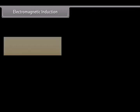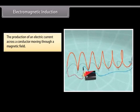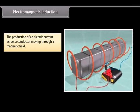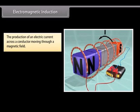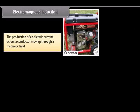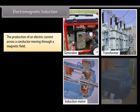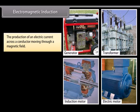Electromagnetic induction. The production of an electric current across a conductor moving through a magnetic field is called electromagnetic induction. For example, generators, transformers, induction motors, electrical motors, synchronous motors, and solenoids all use electromagnetic induction.